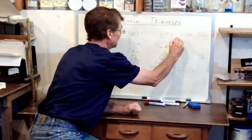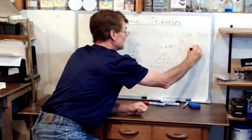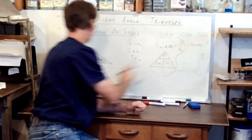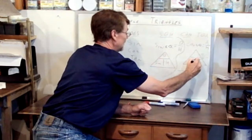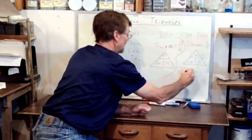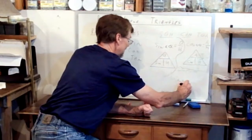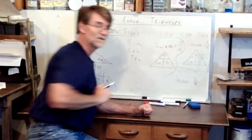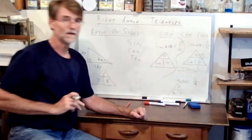Let's try the second part of SOHCAHTOA. C stands for cosine — the cosine of angle theta equals A over H, which is the adjacent over the hypotenuse. And finally, Toa: T is for the tan function. The tangent of angle theta equals O over A — opposite over adjacent.